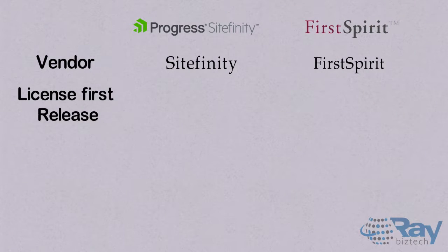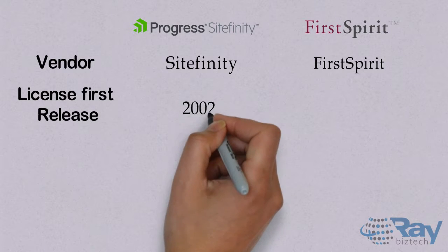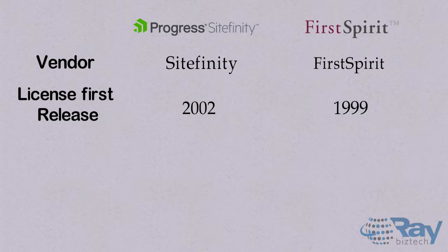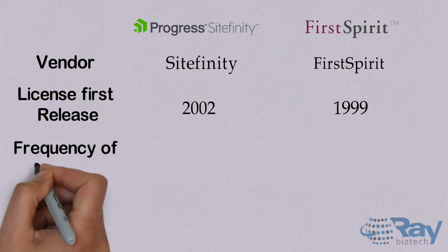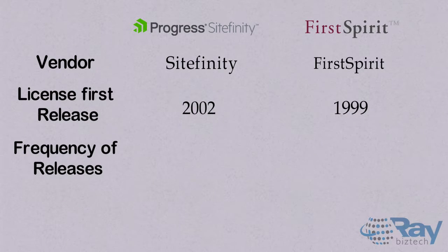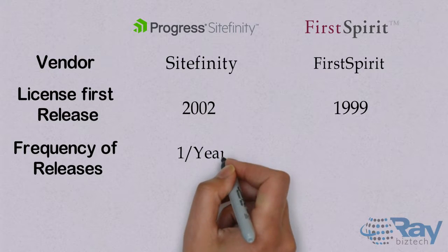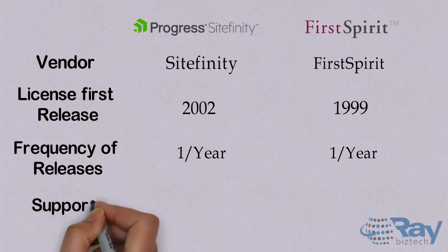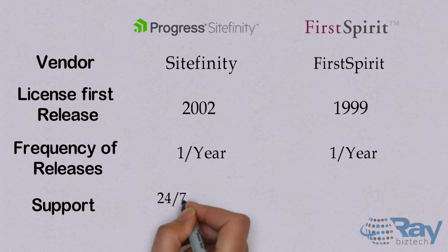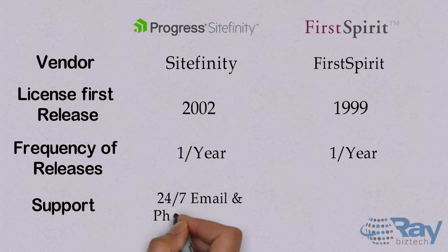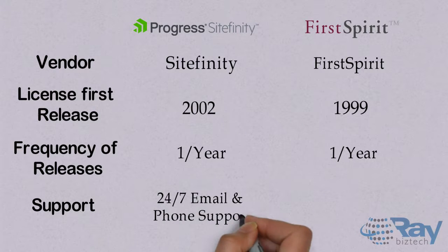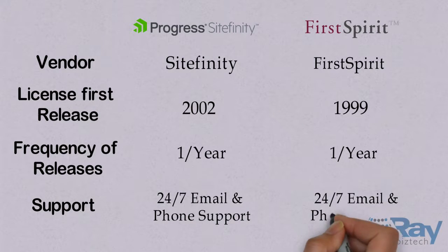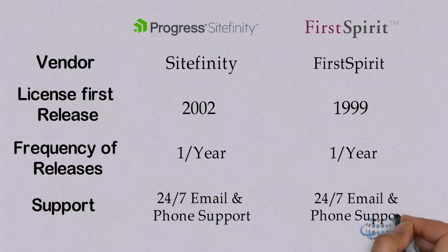License: first release is in 2002 for Sightfinity and in 1999 for First Spirit. Frequency of releases is 1 per year for both. Support is 24x7 email and phone support for both Sightfinity and First Spirit.